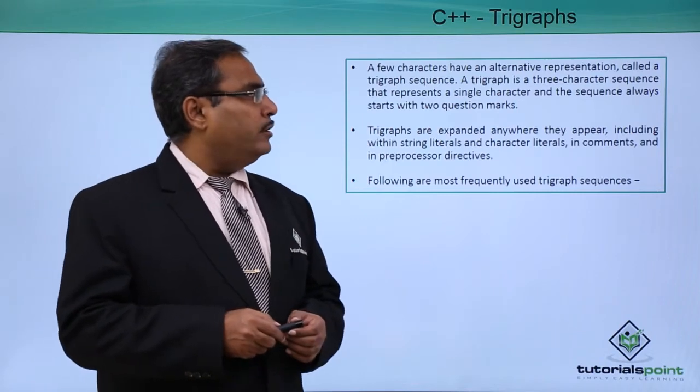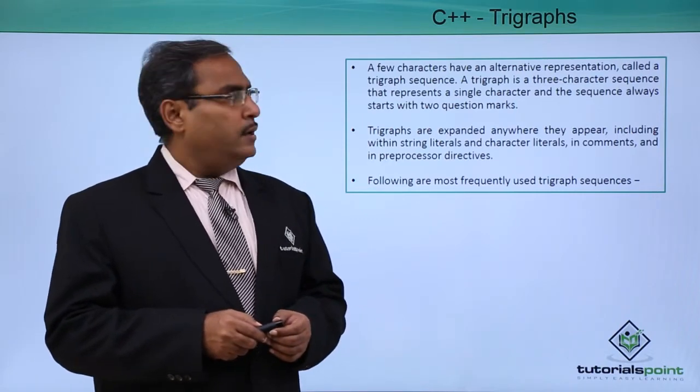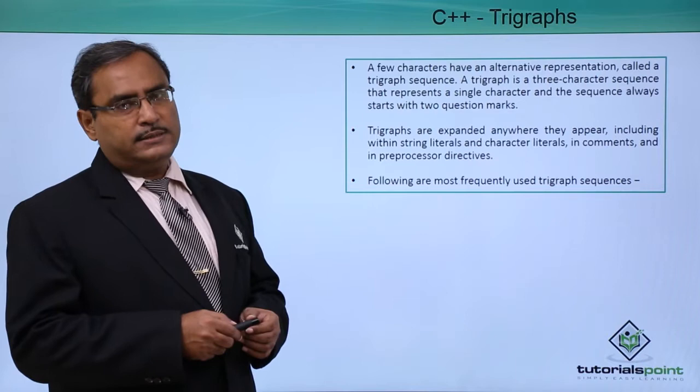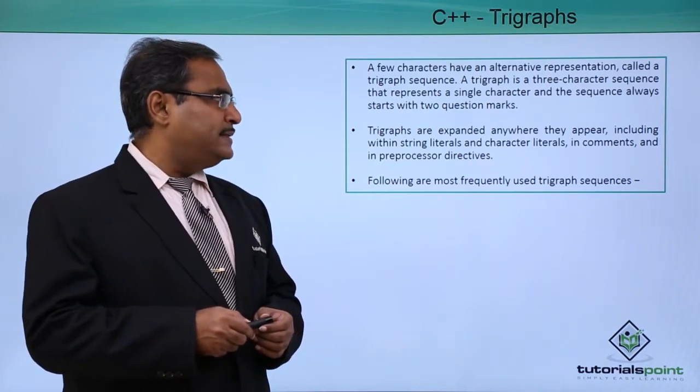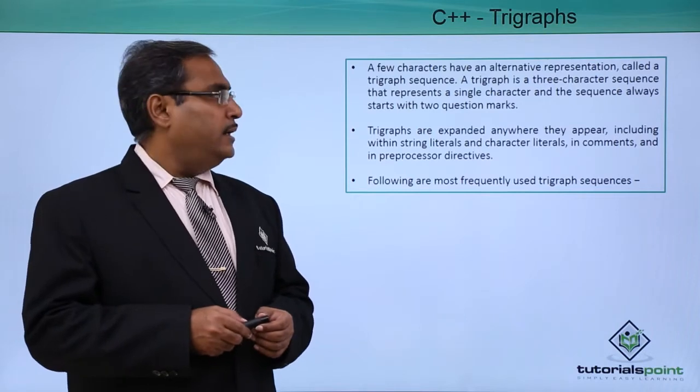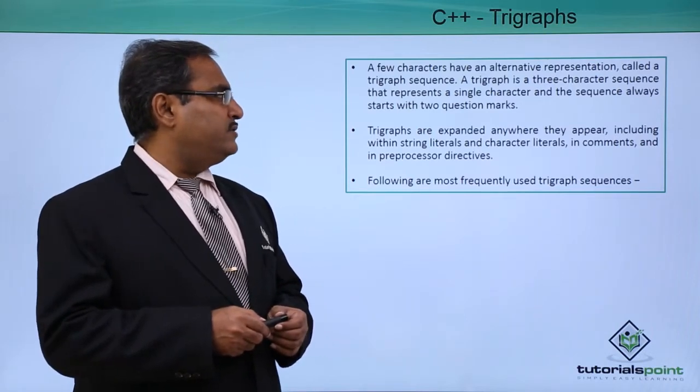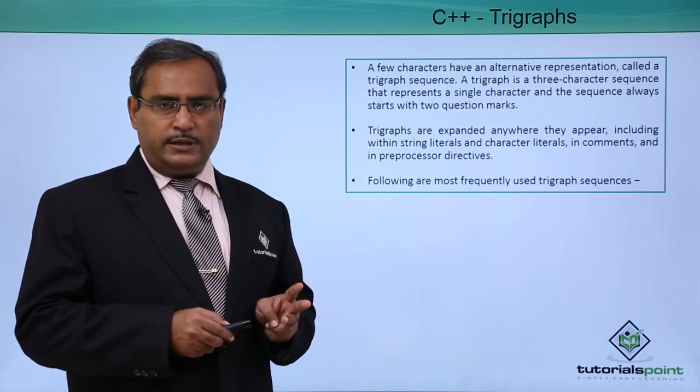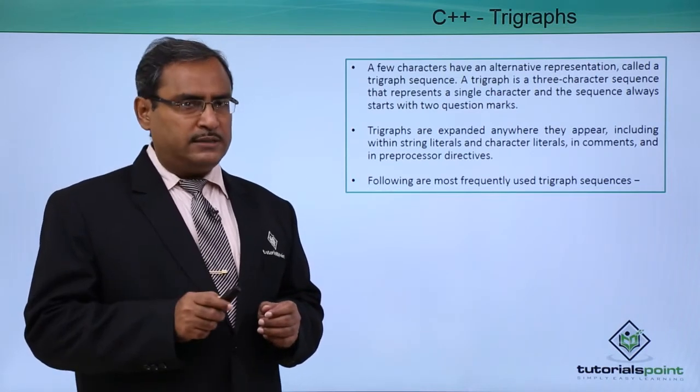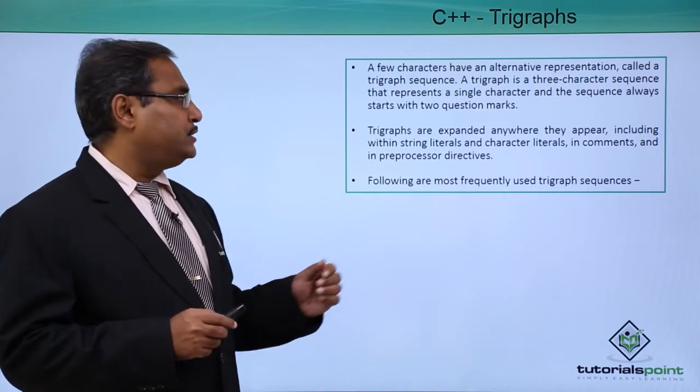A few characters have an alternative representation called a trigraph sequence. A trigraph is a three-character sequence that represents a single character, and the sequence always starts with two question marks and will have some alternative presentation.